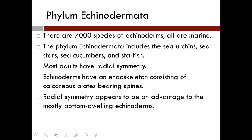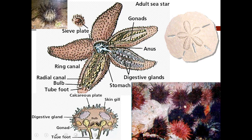The larvae, which are bilaterally symmetrical, are ciliated and free-swimming. As adults, they exhibit pentaradial symmetry, in which the body is arranged into five parts around a central axis. Biologists hypothesize that early Echinoderms were sessile, and that radial symmetry evolved as an adaptation to their lifestyle, allowing these animals to respond effectively in every direction. They have an endoskeleton consisting of calcareous plates that bear spines, and the radial symmetry makes them intense predators that live mostly at the bottom of the ocean.